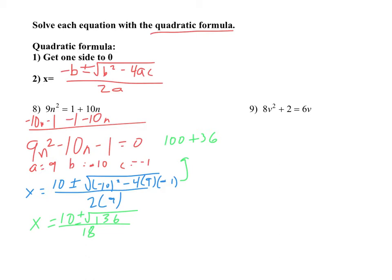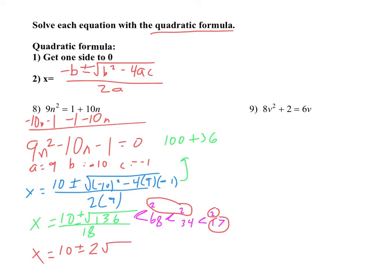Next, we always want to simplify the radical 136. We'll break that down with a factor tree. It's even, so we divide by 2 to get 68. 68 is even again, divide by 2 to get 34. 34 is still even: 2 and 17. We can't break down 17 anymore. So we have twin 2s — they go outside the radical — and loner 2 and loner 17 stay inside and multiply back together: 2 times 17 is 34. So it's the square root of 34, all over 18.